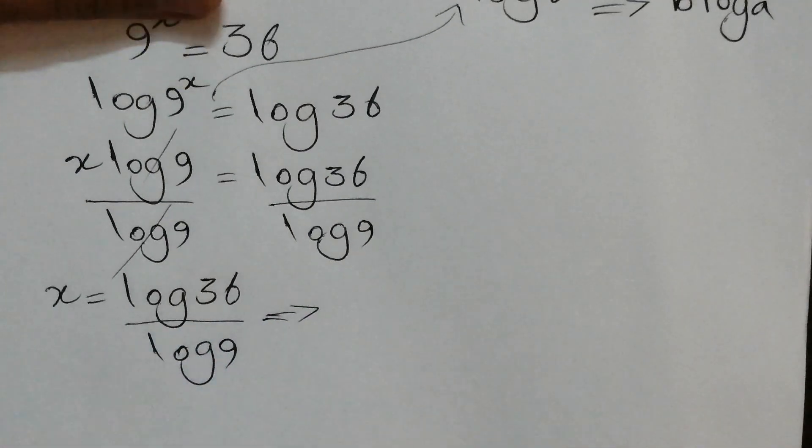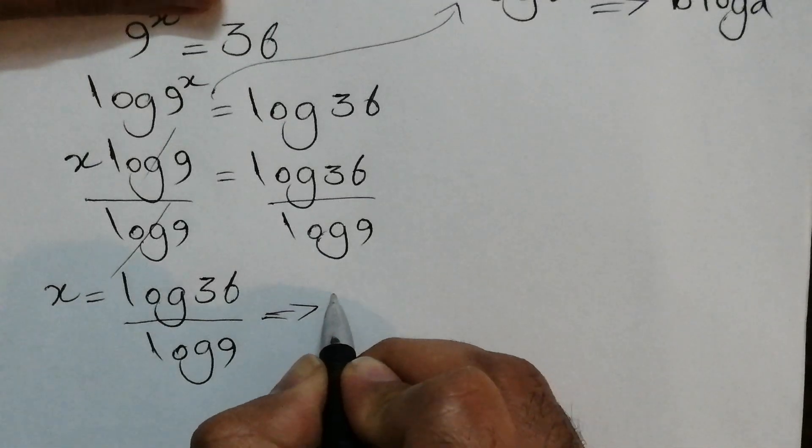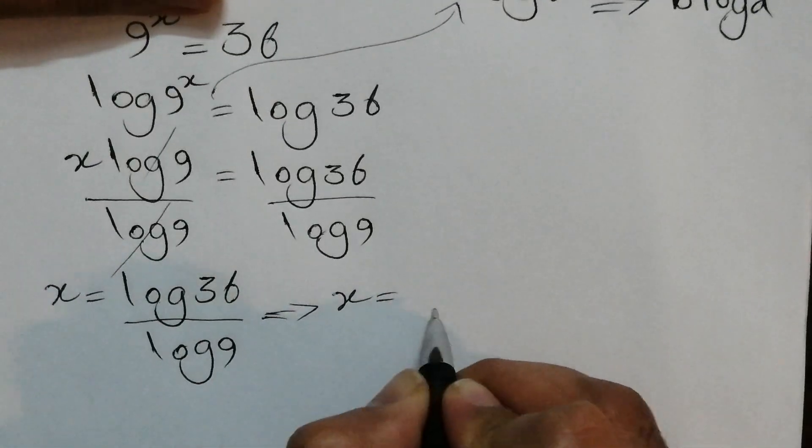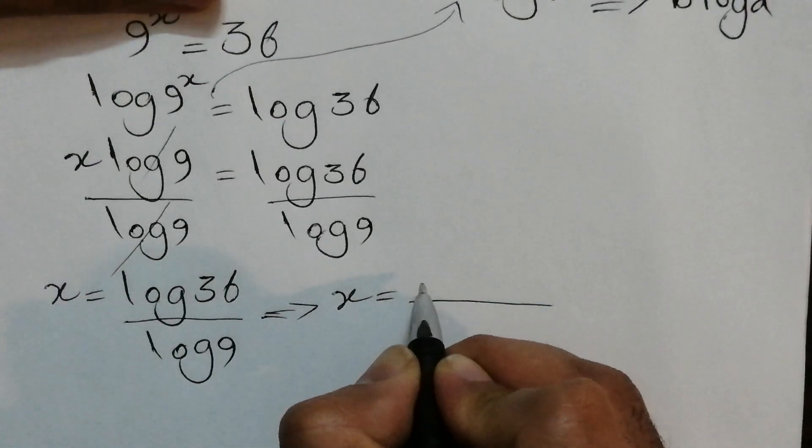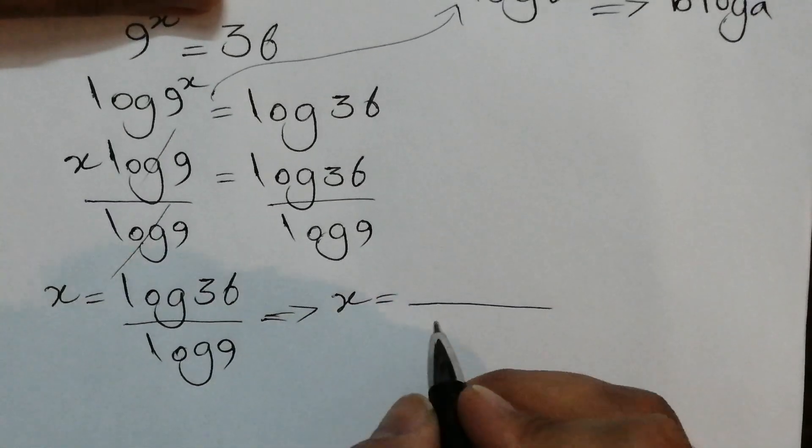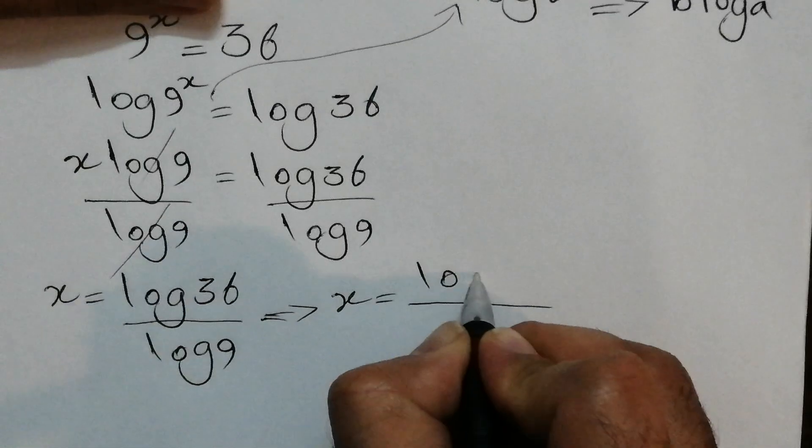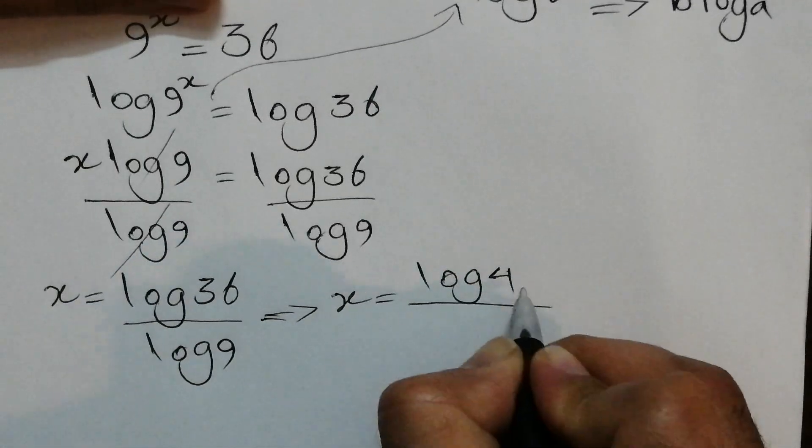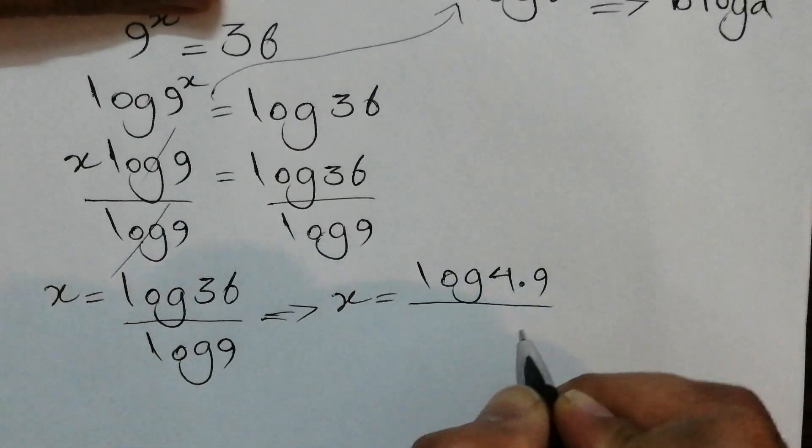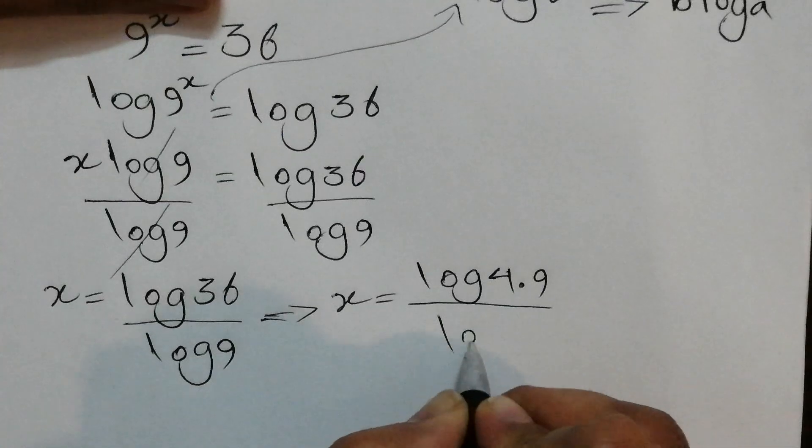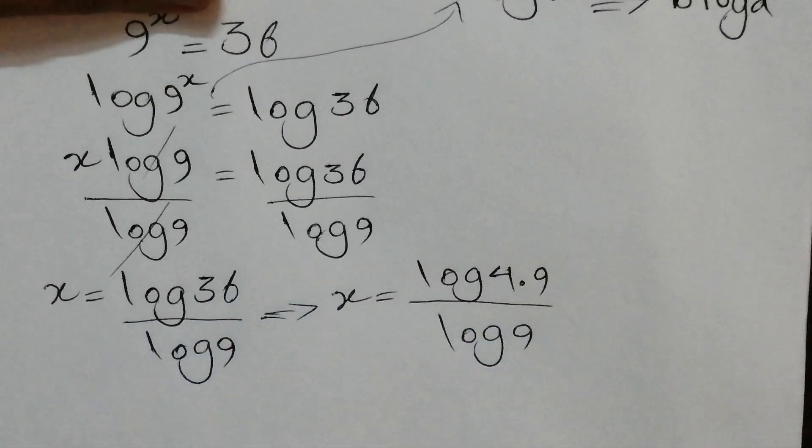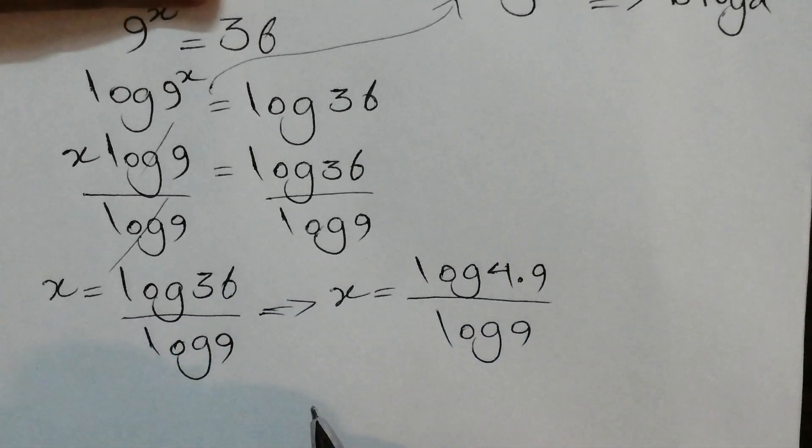Now one step further, we can rewrite this as like this. So x equals, we can rewrite 36 as 4 times 9 over 9. So how can we proceed further?